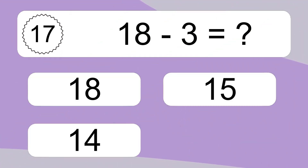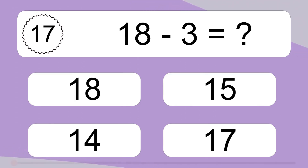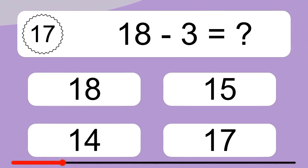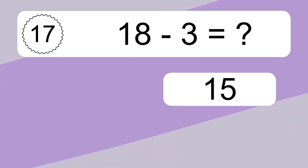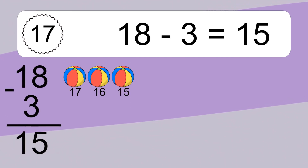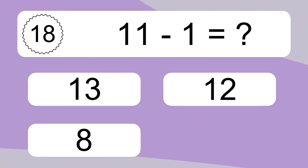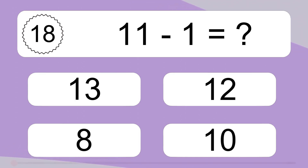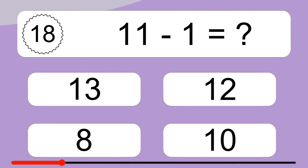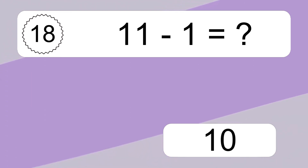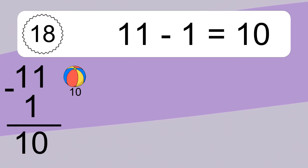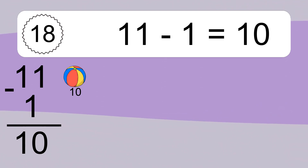18 minus 3 equals what? 18 minus 3 equals 15. Let's count it. 17, 16, 15. 11 minus 1 equals 10. Let's count it. 10.